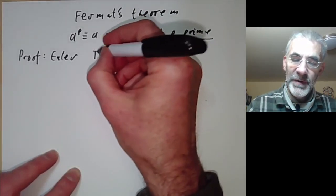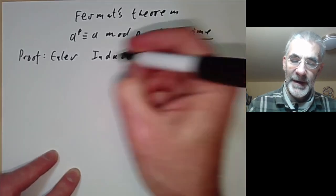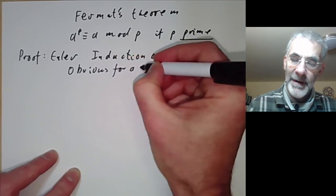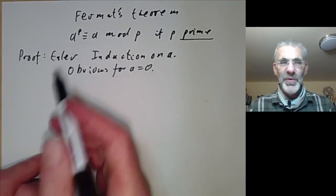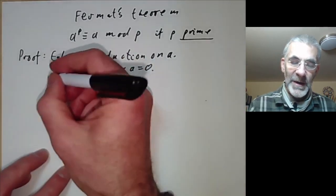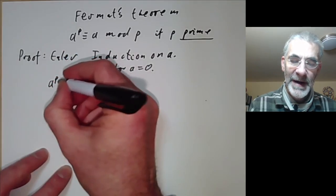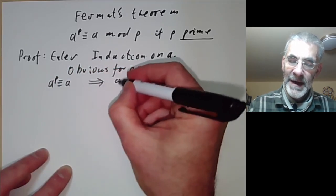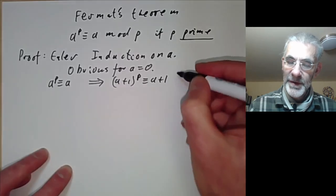We prove it by induction on a. It's obvious for a equals zero, and we're going to prove it for positive a — the proof for negative a is pretty much the same. What we want to do is show that the result for a implies: a to the p congruent to a mod p implies (a+1) to the p is congruent to a+1 mod p.